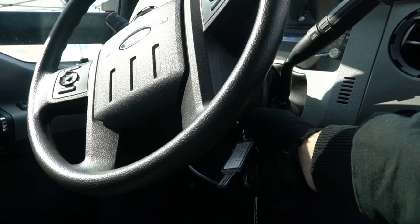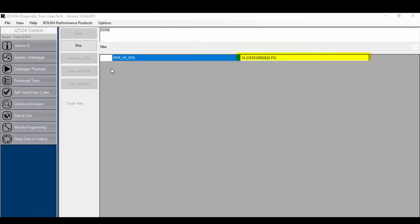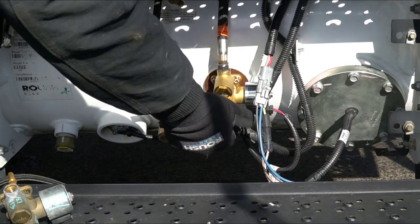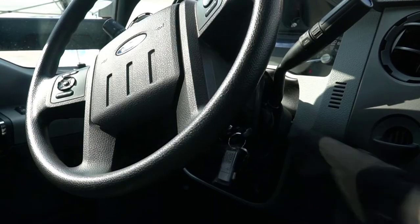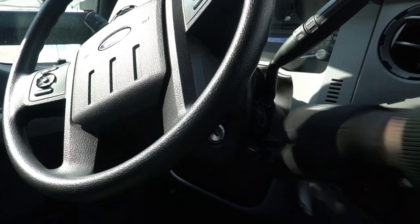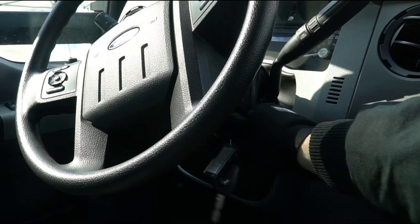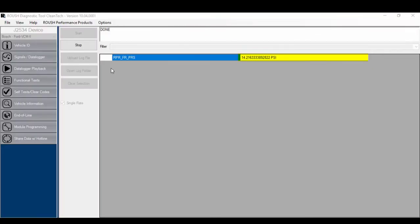Key the vehicle to the ON position using a capable OBD2 scan tool. Monitor fuel rail pressure, FRP. In this video, we are using the Roush Diagnostic Tool. Open the manual shutoff valve and key the vehicle to start. After 5 seconds, key the vehicle off. Key vehicle to ON and measure fuel rail pressure. The pressure should read below 15 psi.